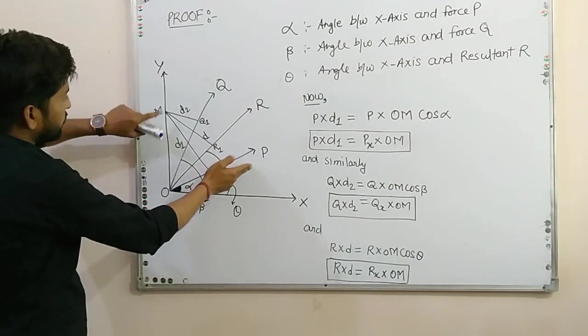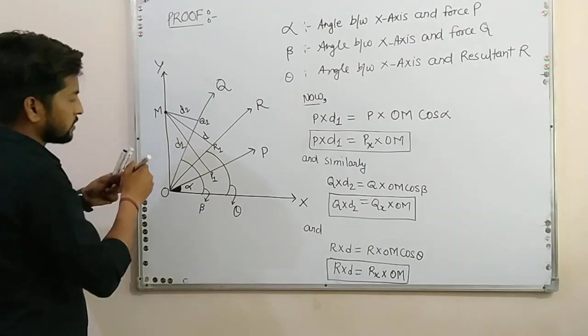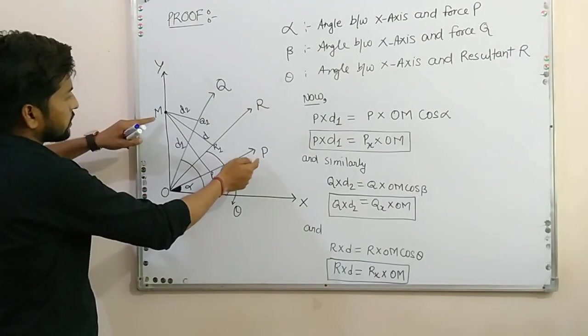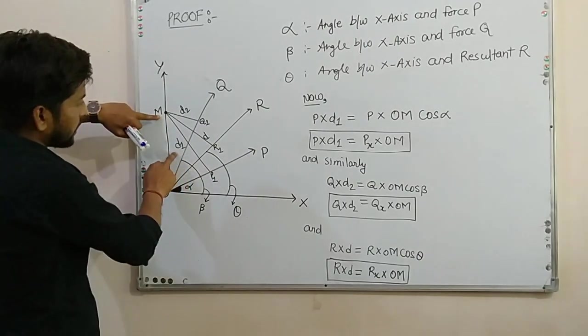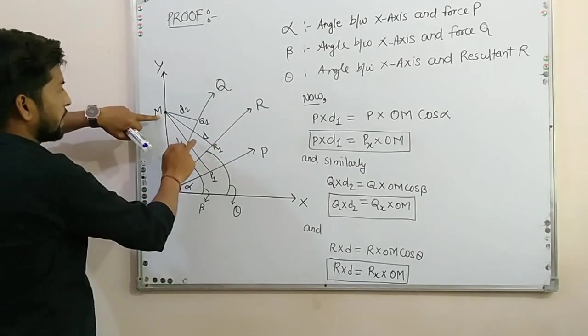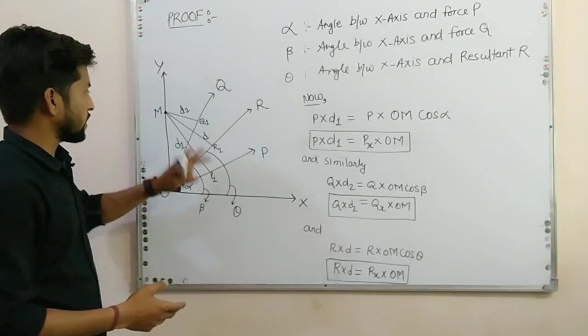If I take moment of P about point M, then perpendicular distance if we see. Then P, perpendicular distance from M to P is D1. For R it is D, for Q it is D2. These are the old ones we have marked.